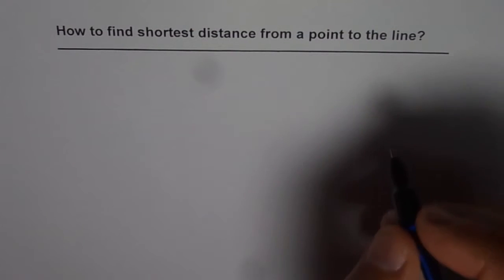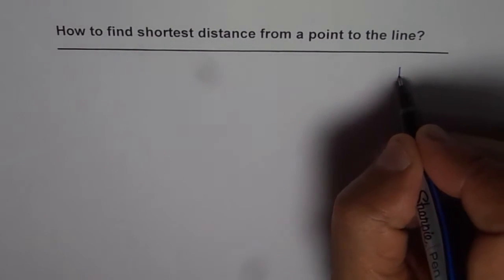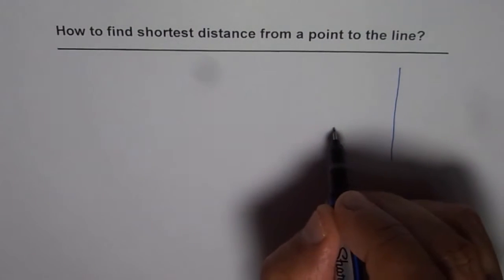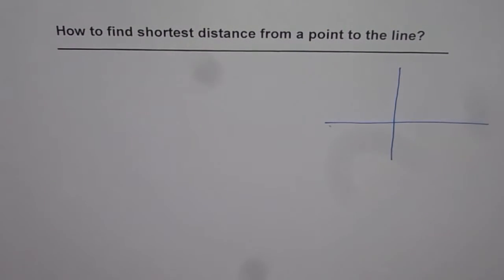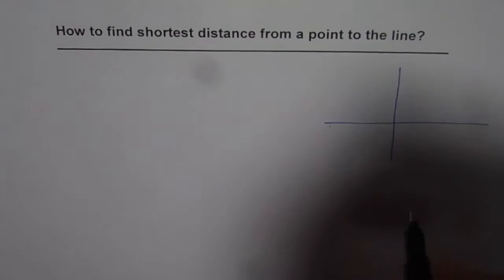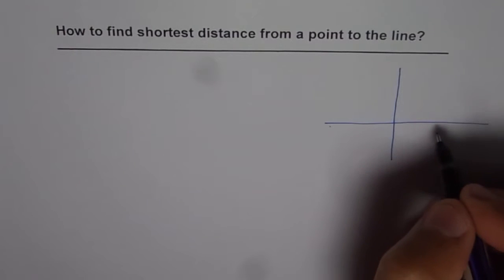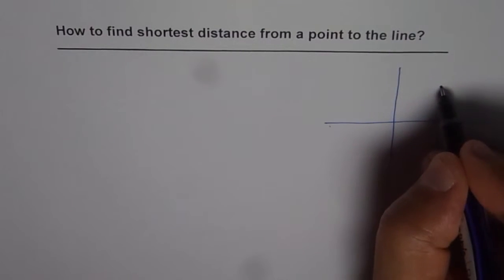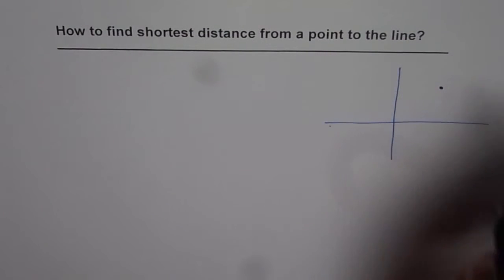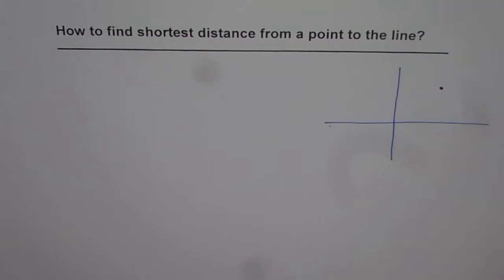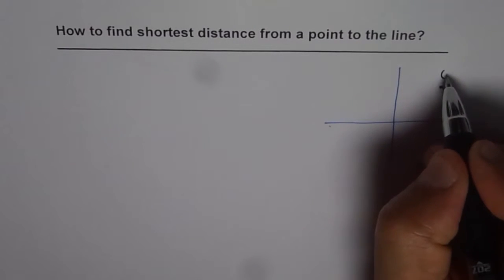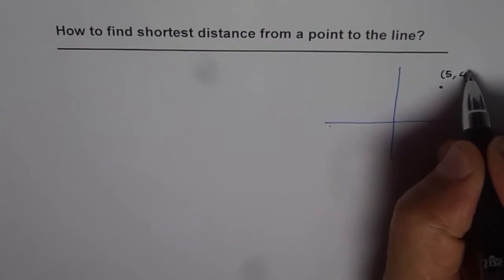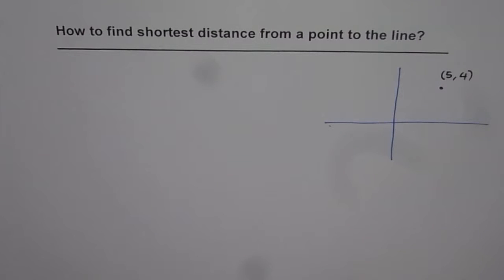Let us consider a point. Let me sketch the coordinate system here. We have some point on this coordinate plane. Let the point be 5, 4. That means the x coordinate of the point is 5 and the y coordinate is 4.